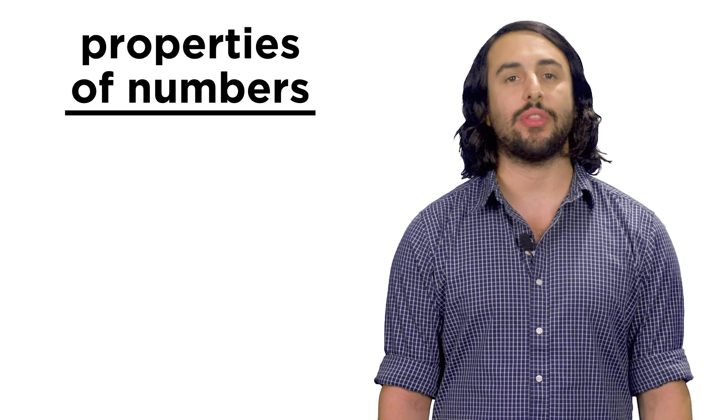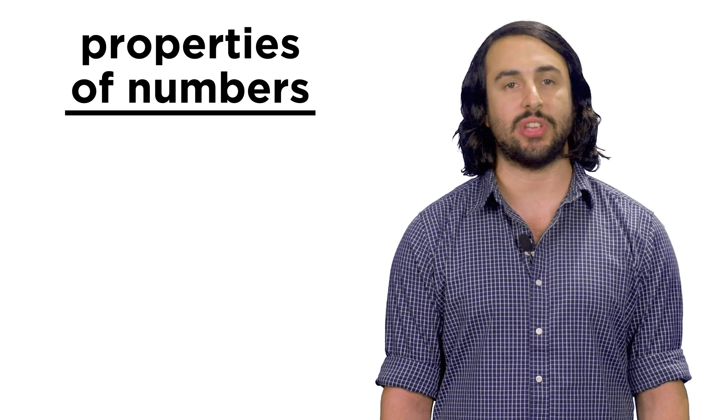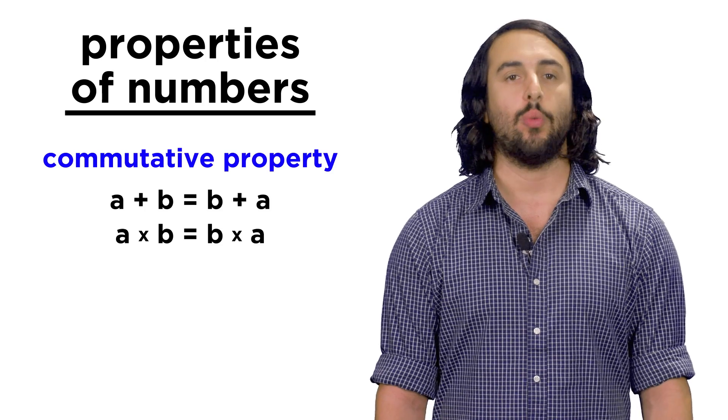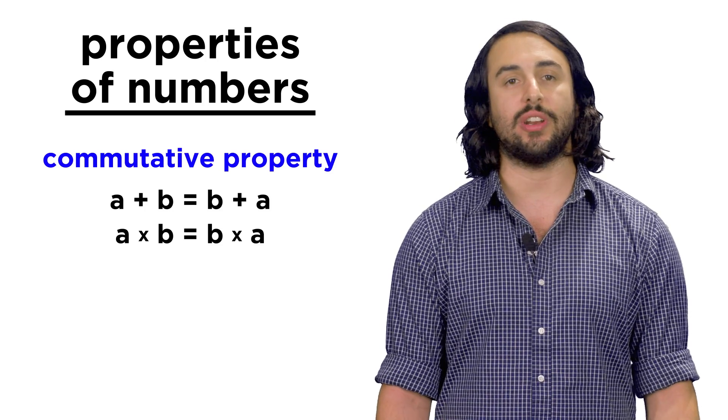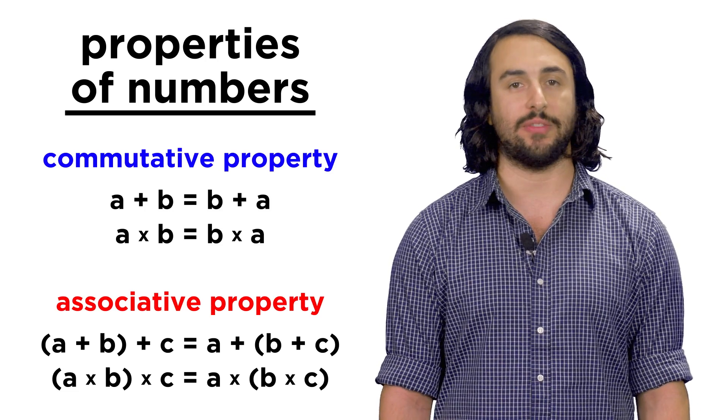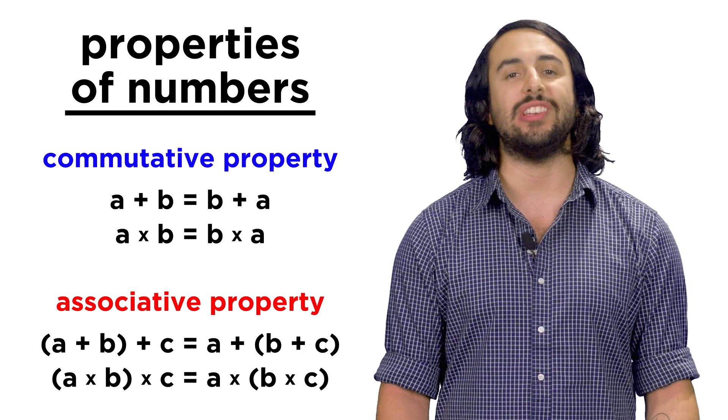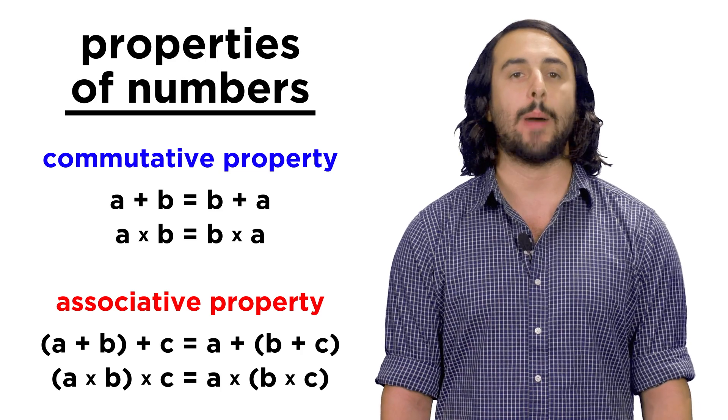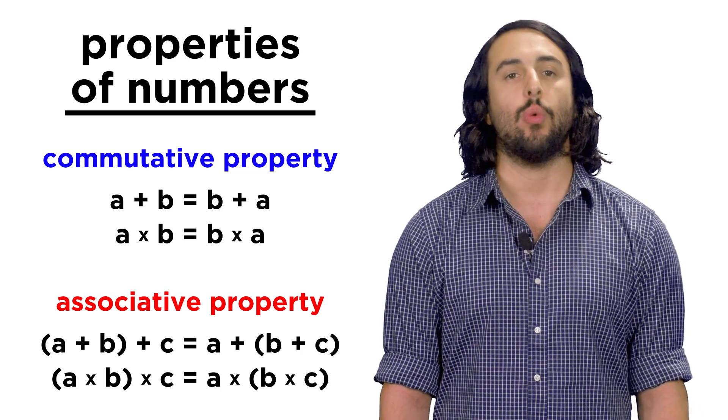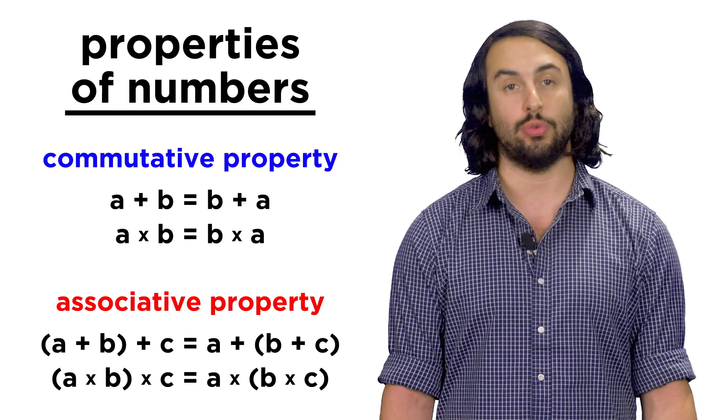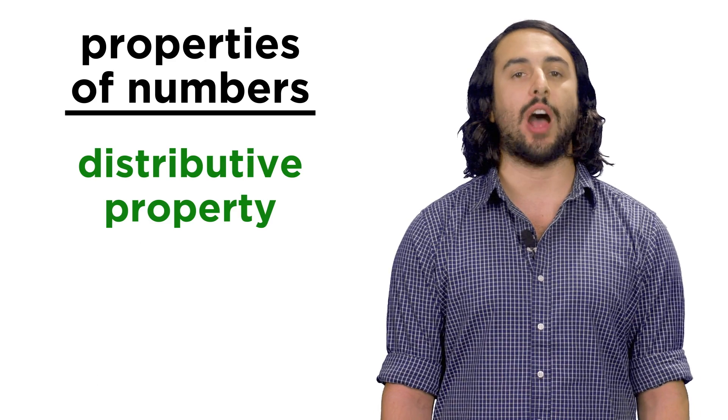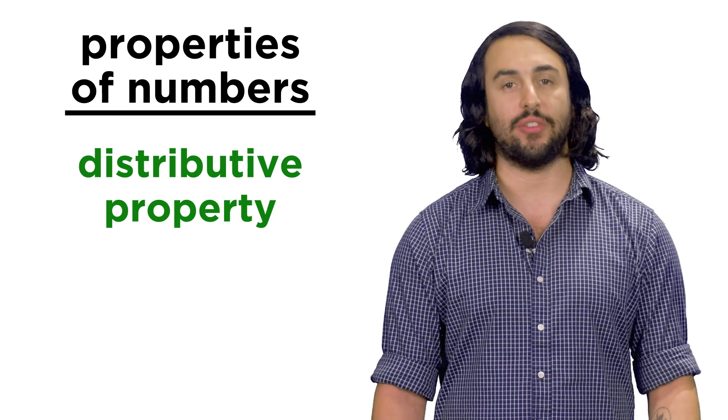As we learn math, we will see that there are certain properties of numbers that are very important. We already learned about the commutative property and the associative property, and we saw how addition and multiplication abide by these properties, while subtraction and division do not. Now let's learn another property, the distributive property.